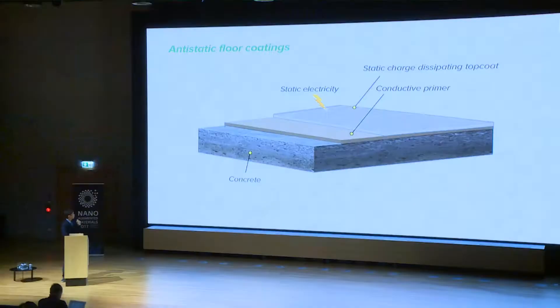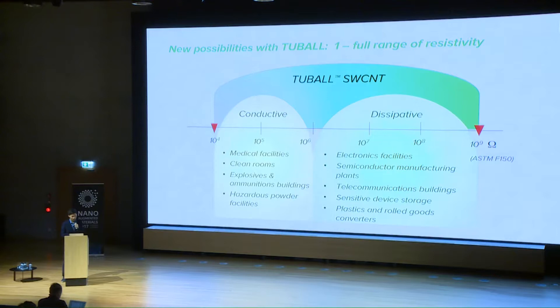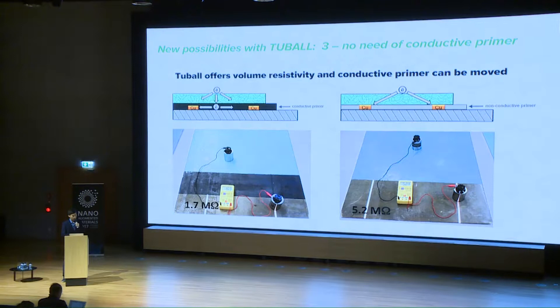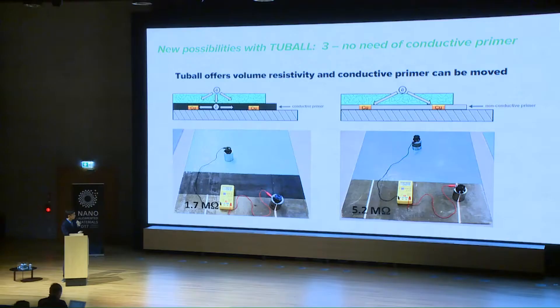I would highlight our results in anti-static floor coatings. First of all, we can cover basically all the range of resistivity for the listed applications. Thanks to the low dosage of CNTs, we can get decolored solutions. A third benefit is the possibility to remove the conductive primer, because our nanotubes form a 3D conductive network so that charge can travel on the surface and inside the volume.